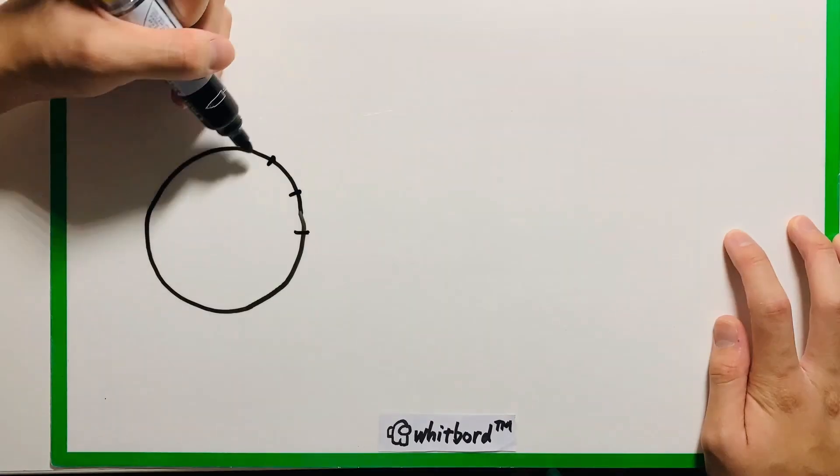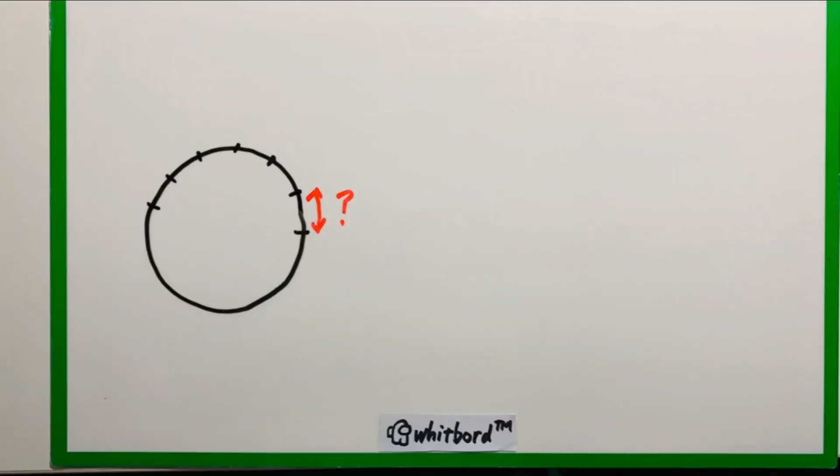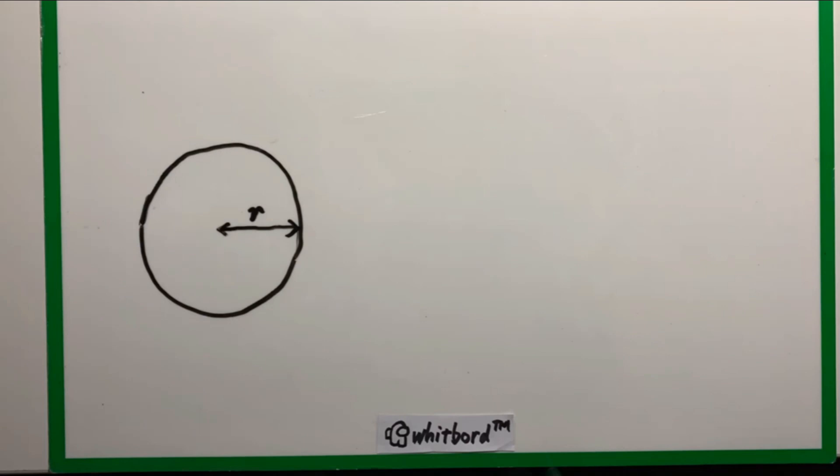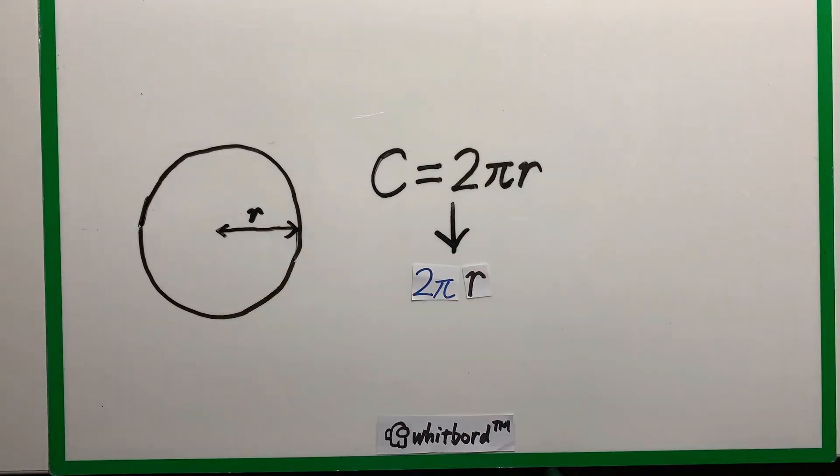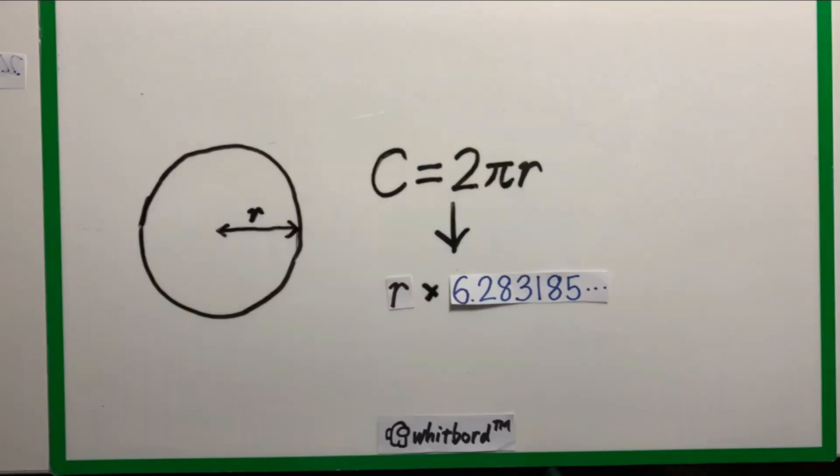We've described angles using rotations, so it would make sense to start off with a circle. And we want to divide it into equal parts. We know that given radius r, the circumference is 2πr, which is basically r times a constant. This gives us an idea.